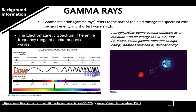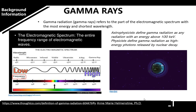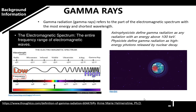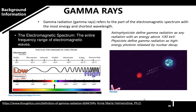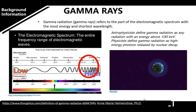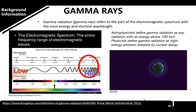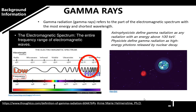Gamma radiation refers to the part of the electromagnetic spectrum with the most energy and shortest wavelength. In our electromagnetic spectrum, gamma rays is located in this area.